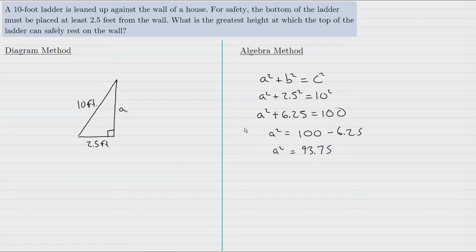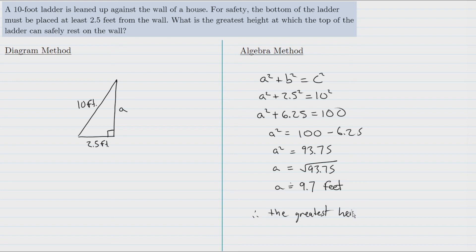100 minus 6.25 is 93.75, so a squared equals 93.75. To find a, we use the inverse operation of squaring, which is square rooting: a equals the square root of 93.75. Using a calculator, the square root of 93.75 is approximately 9.7. So a equals approximately 9.7 feet, and therefore the greatest height the ladder can safely reach is 9.7 feet.